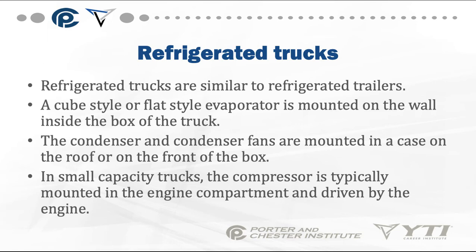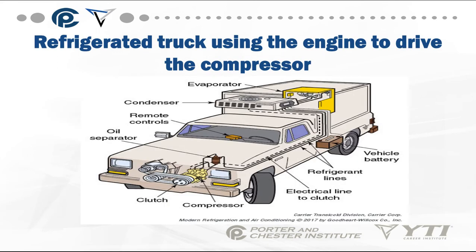Refrigerated trucks are similar to refrigerated trailers. A cube-style or flat-style evaporator is mounted on the wall inside the box of the truck. The condenser and condenser fans are mounted in a case on the roof or on the front of the truck box. In small-capacity trucks, the compressor is typically mounted in the engine compartment and driven by the engine. This is just a cutaway of a small box-style refrigerated truck: the evaporator is inside the box, the condenser is on top, and the compressor is in the engine compartment with refrigeration lines connecting the two.